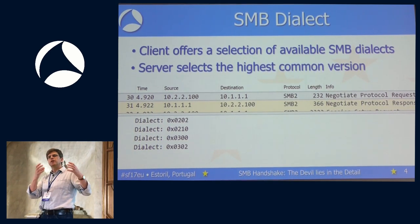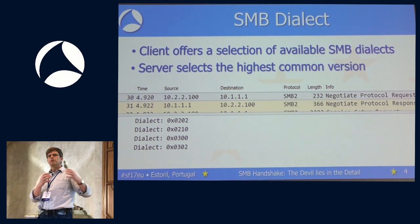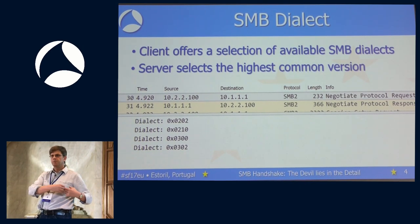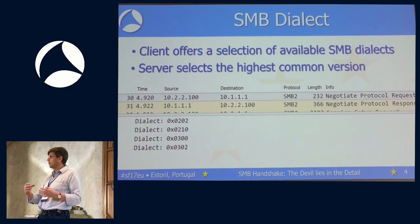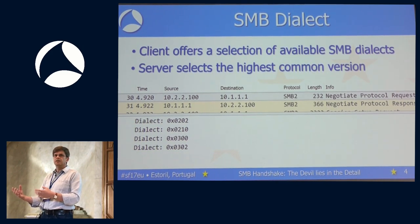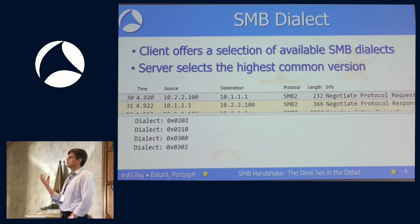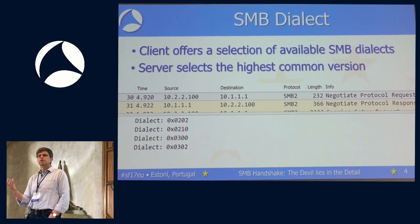If you have one server in Europe and a workstation in the United States, response times are greatly driven by the speed of light. We cannot change the speed of light, so the protocol was changed to allow better performance over wide area networks. That is one of the huge differences and advantages of using SMB2, which was introduced with Windows Vista.